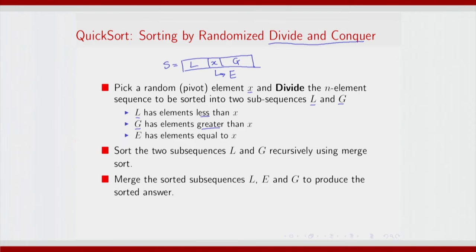This comprises the divide part; what follows is conquer. In conquer, you apply the same procedure of identifying a pivot element and identifying the subset of l that is less than x_l, and the subset of elements that are greater than x_l, and then applying conquer on each of those partitions again. Ditto with g — you will divide g into three parts.